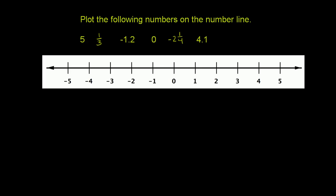Plot the following numbers on the number line. So the first number we have here is 5. And so 5 is 5 to the right of 0. 5 is right over there. That's our 5.